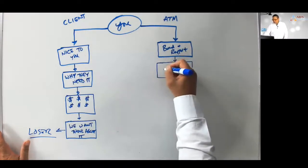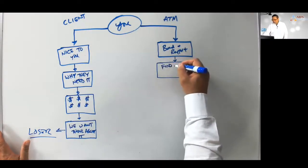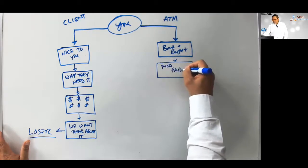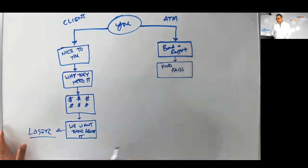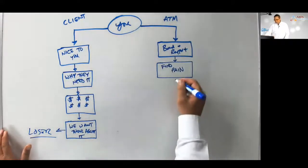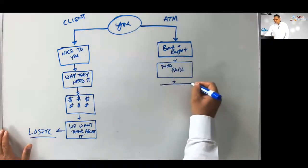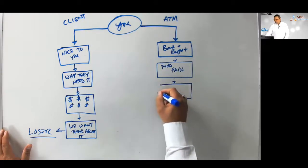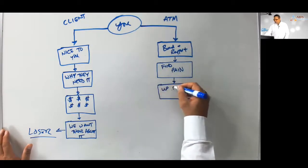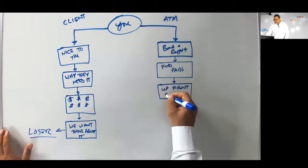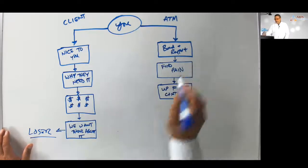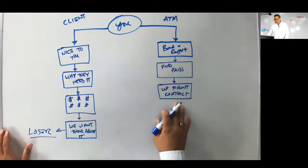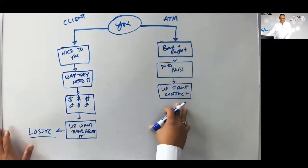Then once we feel really good about the client, we're going to move into finding the pain. Why is it that they sent this form in? We want to drill down to the emotional reason why they need this. Once we find the pain, we're going to do an upfront contract. This is where we're going to tell them what's going to go down from this point on.